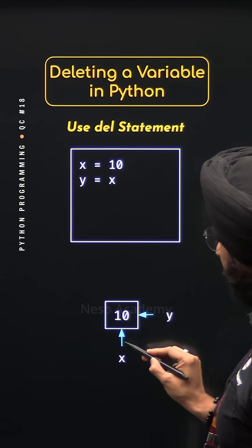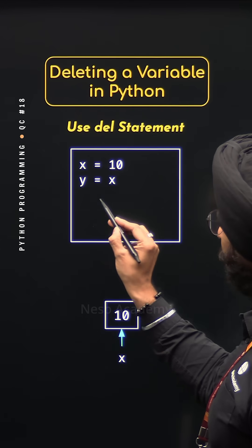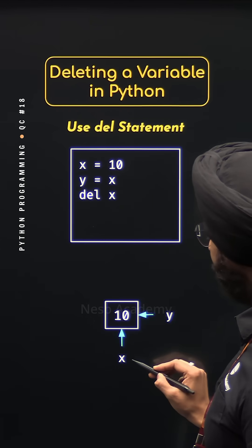Now let's say we want to delete this variable x. We can use del x to delete this variable.